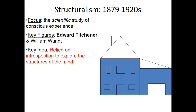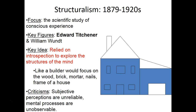The key idea of structuralism is they relied on introspection to explore the structures of the mind. Introspection is a specific vocabulary word we'll cover more in class tomorrow. As mentioned, Wundt was studying the basic structures of the mind and trying to break it down into its smallest parts, which is why it's called structuralism. The criticisms of structuralism are that when you're dealing with the mind, it's very subjective — you can tell me you're thinking or feeling something, but I can't prove it. Because it can't be proven, some people had a problem with this school of thought.